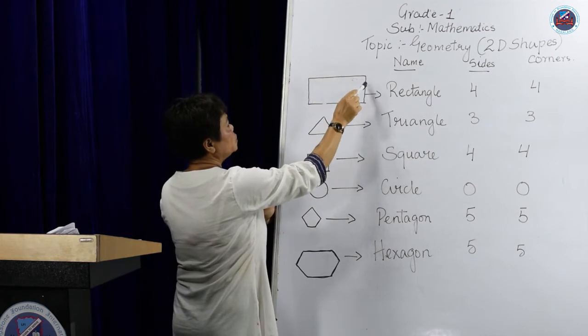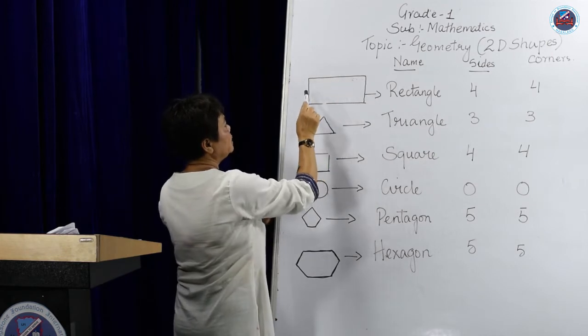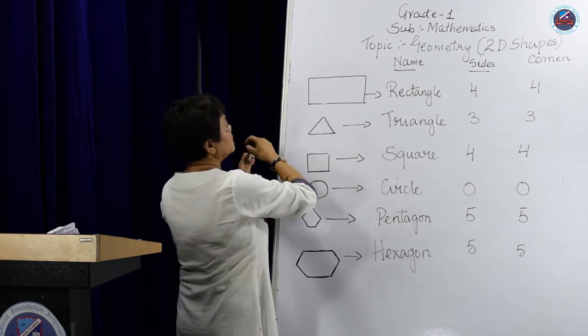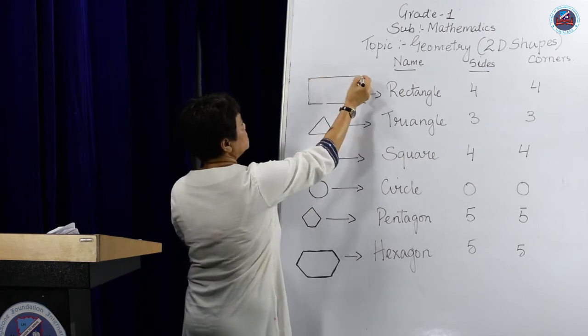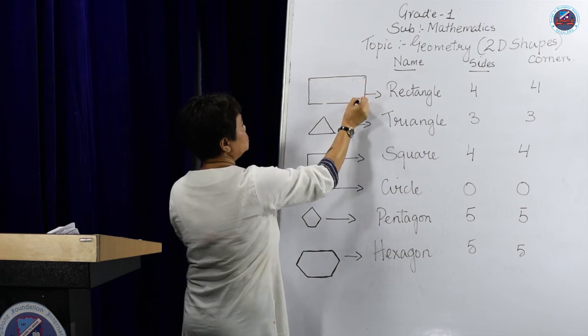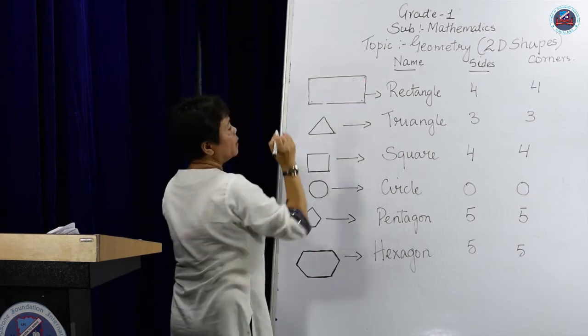These are the sides: one, two, three, four. And these are the corners: one, two, three, four.